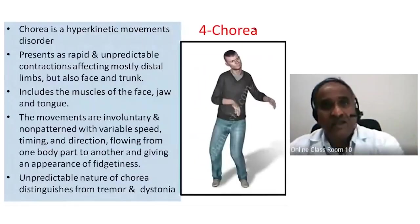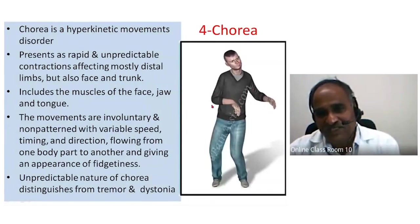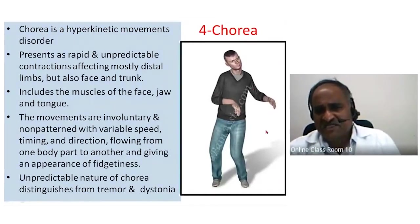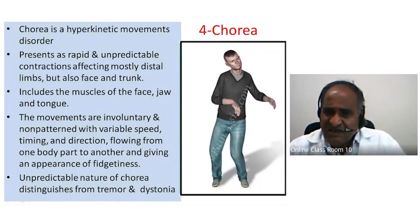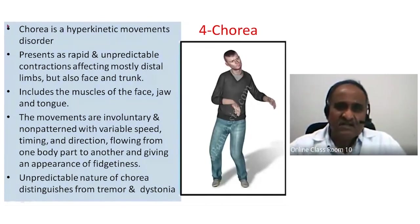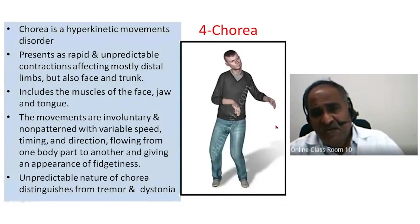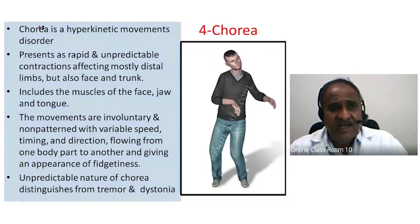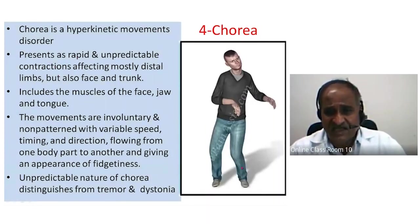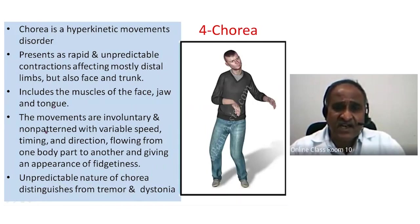Chorea involves movements that are not patterned — affecting limbs, neck, lips, tongue, and eyes in a totally disorderly array. Chorea is a hyperkinetic movement disorder characterized by rapid, unpredictable contractions affecting mostly the distal limbs but also the face and trunk — including jaw muscles. The movements are involuntary and non-patterned, with variable speed — sometimes slow, sometimes fast — and different directions.